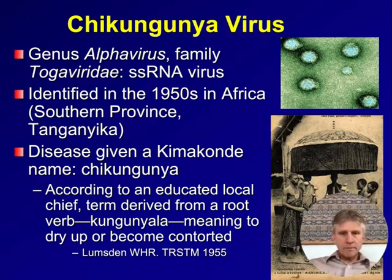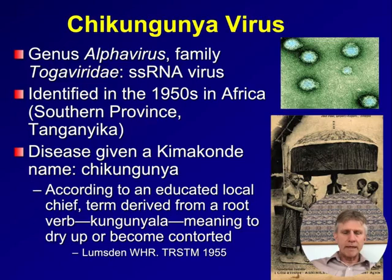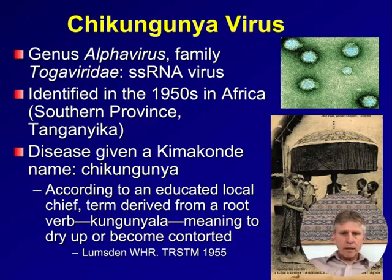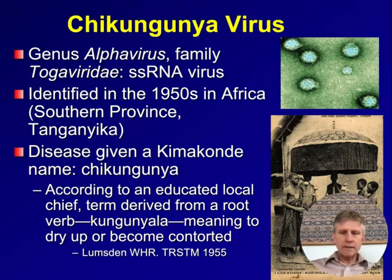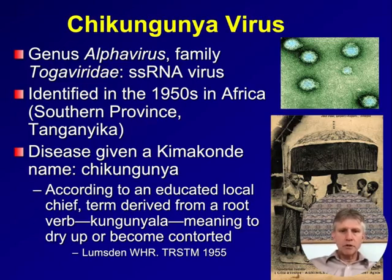Chikungunya is an alphavirus in the alphavirus genus within the Togaviridae family. It's a single-stranded RNA virus, first identified in the 1950s in Africa, in the southern province of Tanganyika — what is now Tanzania. There was a big outbreak, and one of the local chiefs named it after the local term 'kungunya,' meaning 'to dry up or become contorted,' because of the intense joint pains that arise with this infection. This gradually evolved into 'chikungunya.'